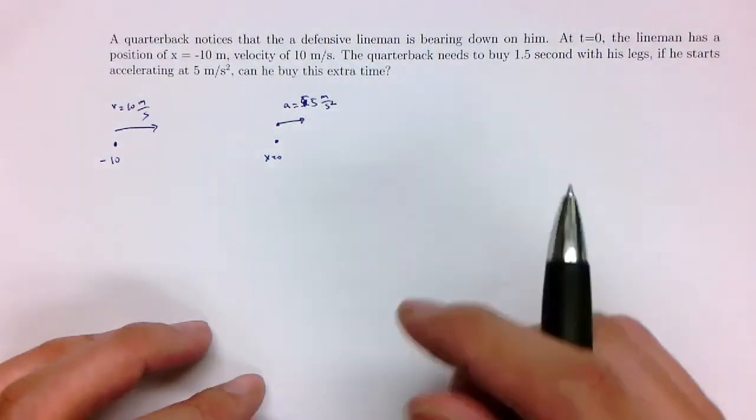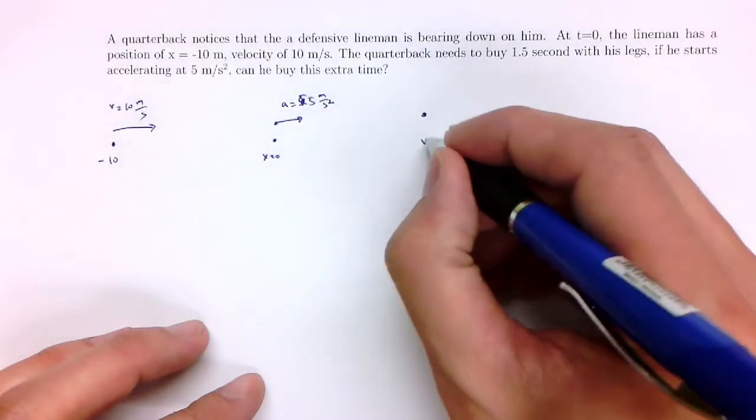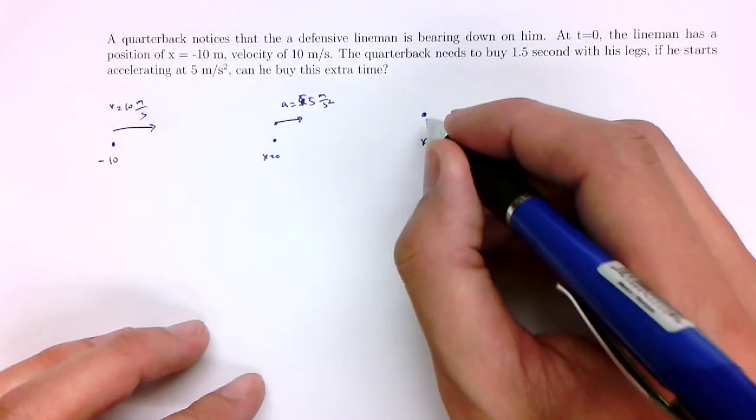We ask the question, can the quarterback get away? We project this forward in time. At some point x, the lineman and the quarterback will meet.